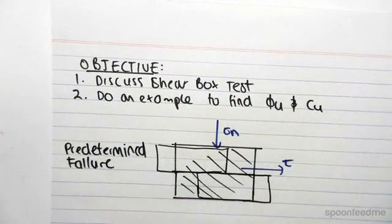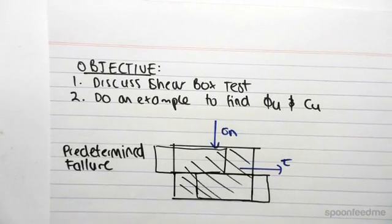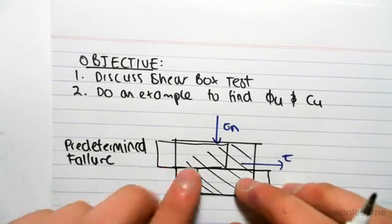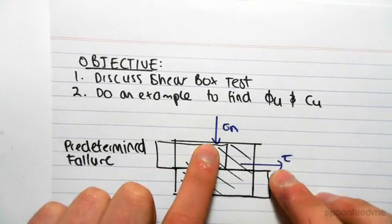So that's the plane it fails on, which is different to the triaxial test which we're going to discuss in a bit. But for a shear box test we have two boxes which are aligned, we apply a shear stress and pull it which creates a shear stress.